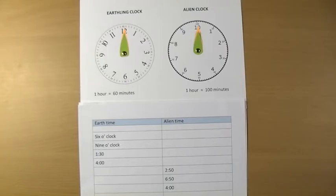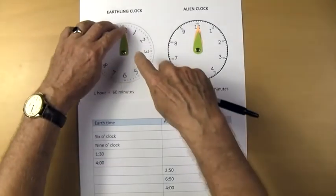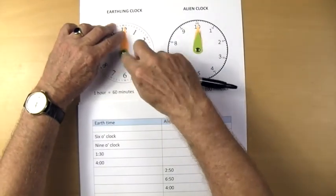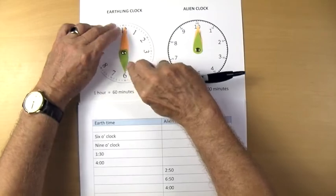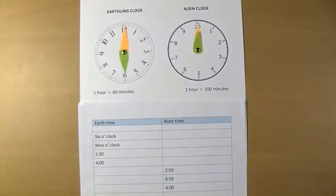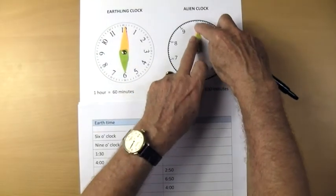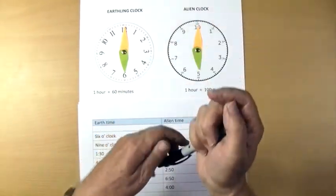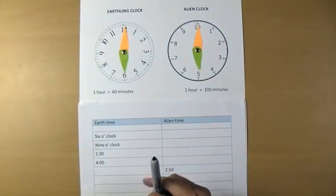What time does the alien's clock say when Earth time is six o'clock? Well, it's gone halfway round. So I guess that the alien time would be five o'clock. I'm going to write that down.